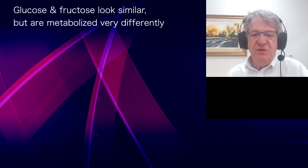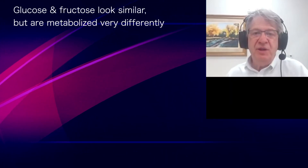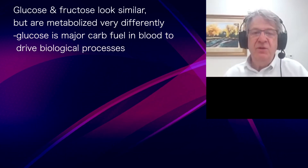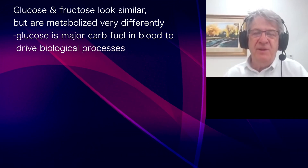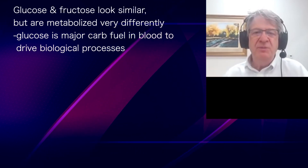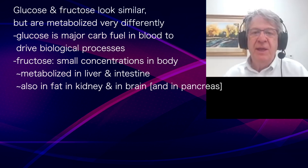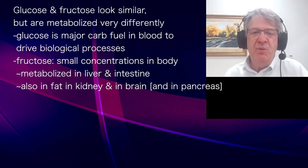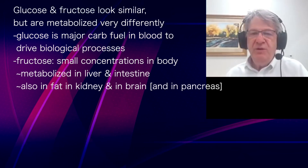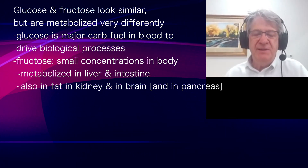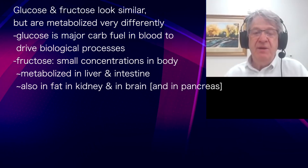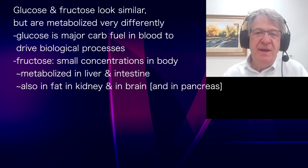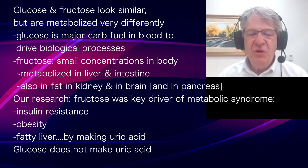Glucose and fructose look very similar in terms of structure and chemistry, but they are very different in the way they are metabolized. Glucose is the major fuel in our blood that we use to drive all biological processes. Fructose is not present very much in the body — only about one one-hundredth of what glucose is. When you eat fructose, it's metabolized mainly in the liver and intestine, but also in other sites like fat, the kidney, the brain, and even the islets of the pancreas where insulin is made.